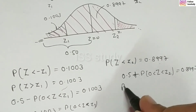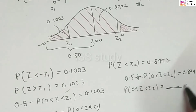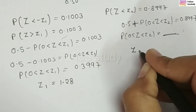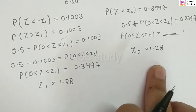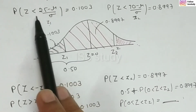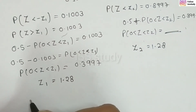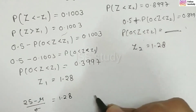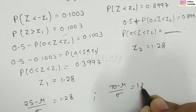When we solve it, the value of Z2 is equal to 1.28. Similarly, Z1 is also equal to 1.28. Now we substitute all these values. We write: 25 minus mu upon sigma equals 1.28, and 70 minus mu upon sigma equals 1.28. These form two equations in mu and sigma.